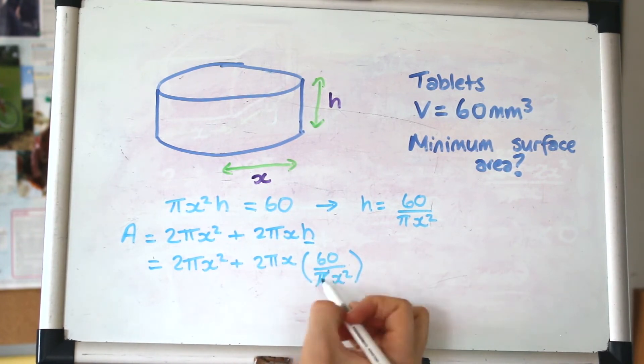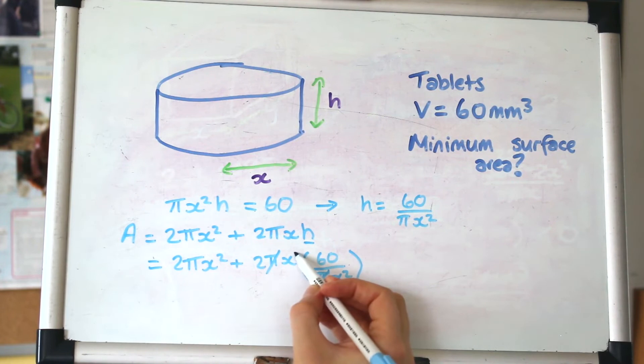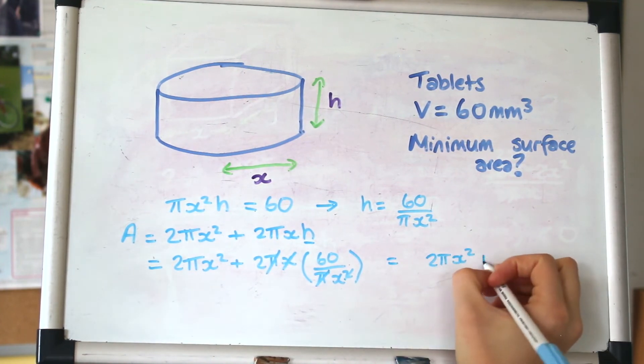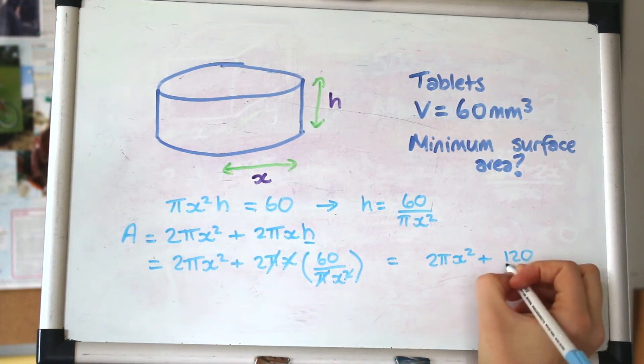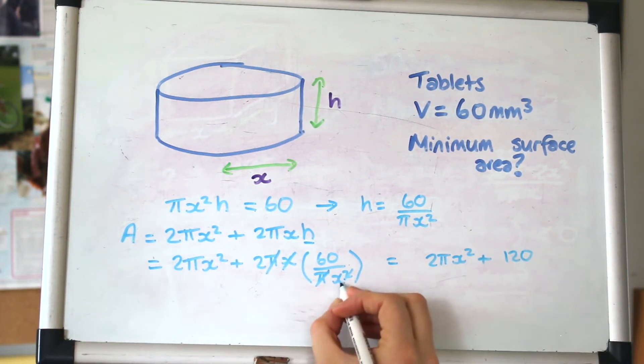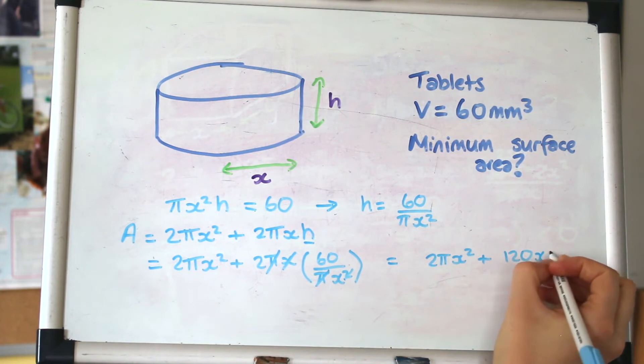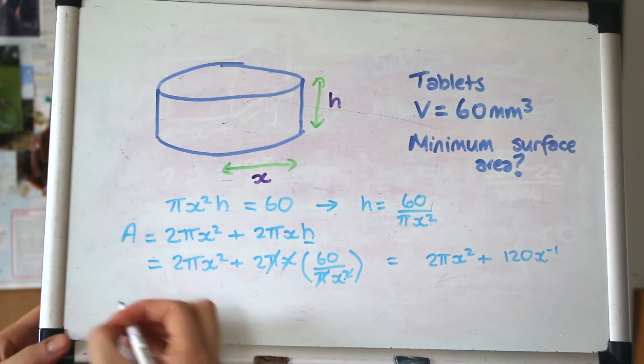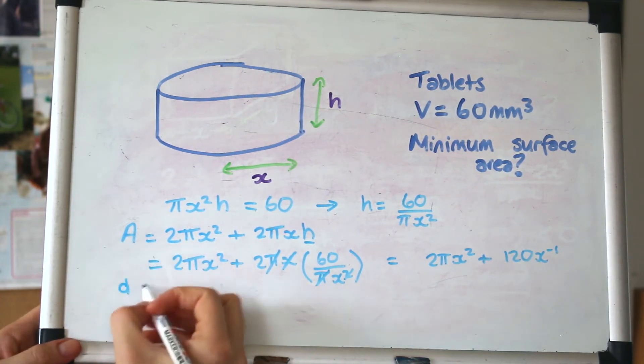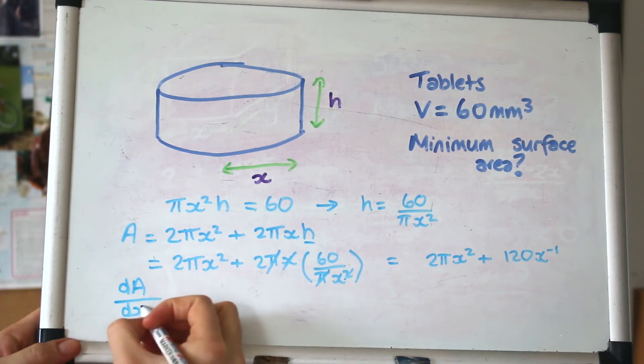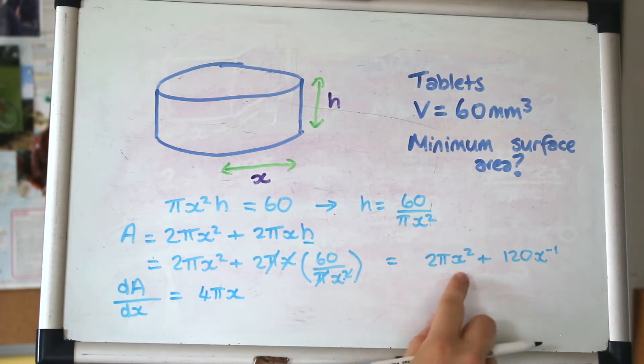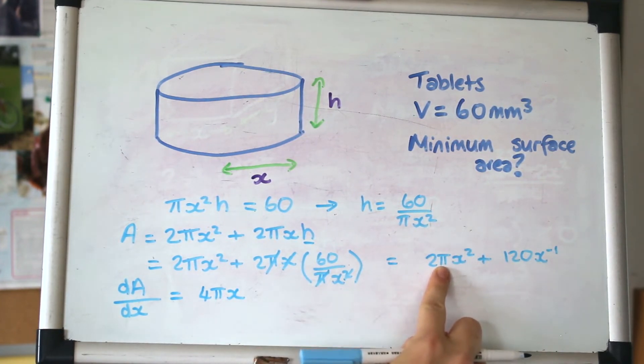Rearranging, h = 60/(πx²). Substitute that in for h and we get A = 2πx² + 120x⁻¹. I'll write the x that's on the bottom as a power of minus 1 because it's easier to differentiate. As you know, the next step is to differentiate, so dA/dx.